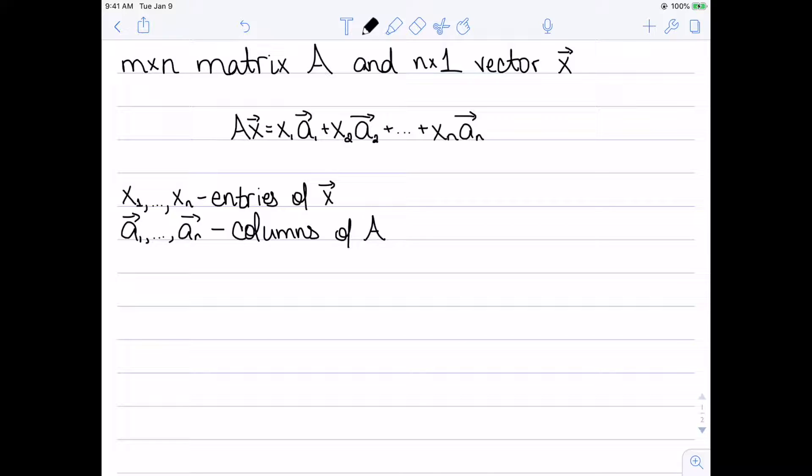And so this is why it's important for the number of columns in A to match the number of rows in x, because I'm essentially going to be multiplying a column of A by a row in x. So let's look at an example.